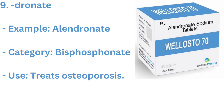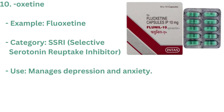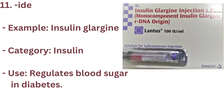9. DRONATE — Example: ALENDRONATE. Category: BISPHOSPHONATE. Use: TREATS OSTEOPOROSIS. 10. OXETINE — Example: FLUOXETINE. Category: SSRI (SELECTIVE SEROTONIN REUPTAKE INHIBITOR). Use: MANAGES DEPRESSION AND ANXIETY.